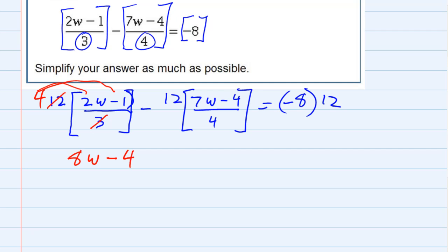Now, for the second term, we also have some canceling, 4 goes into 12, 3 times. But notice this time, I'm distributing a minus 3 to each one of those terms inside the parenthesis. So minus 3 times 7w is minus 21w. Minus 3 times minus 4 is a plus 12.